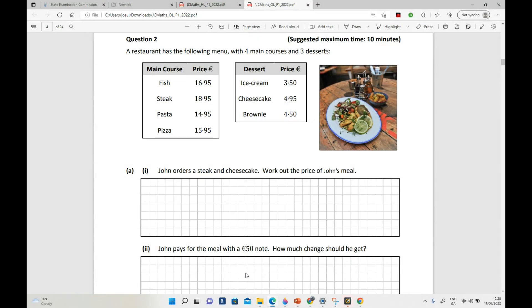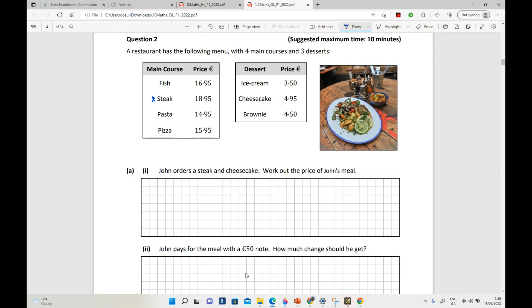Okay, so question two. A restaurant has the following menu, and they show you four main courses with different prices and three desserts with different prices. So John orders a steak, so he's going to order this guy, and he's going to order cheesecake.